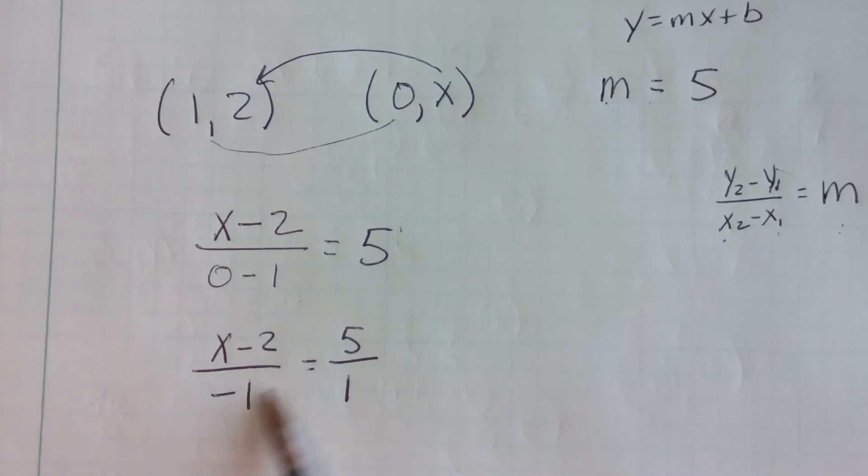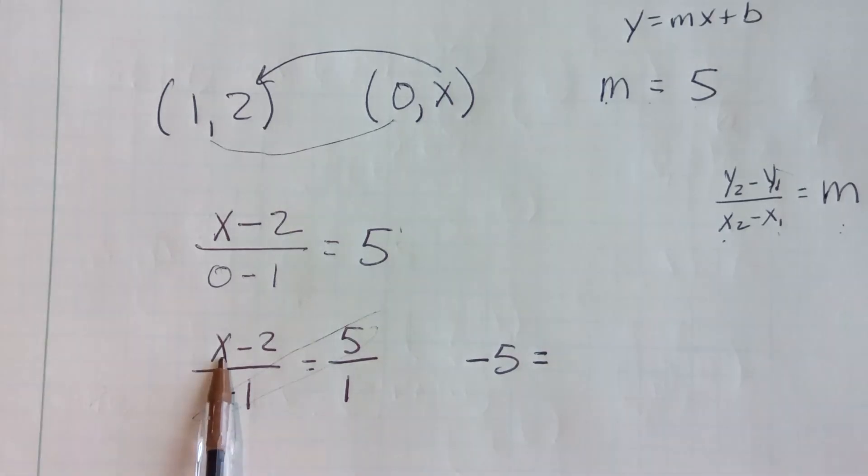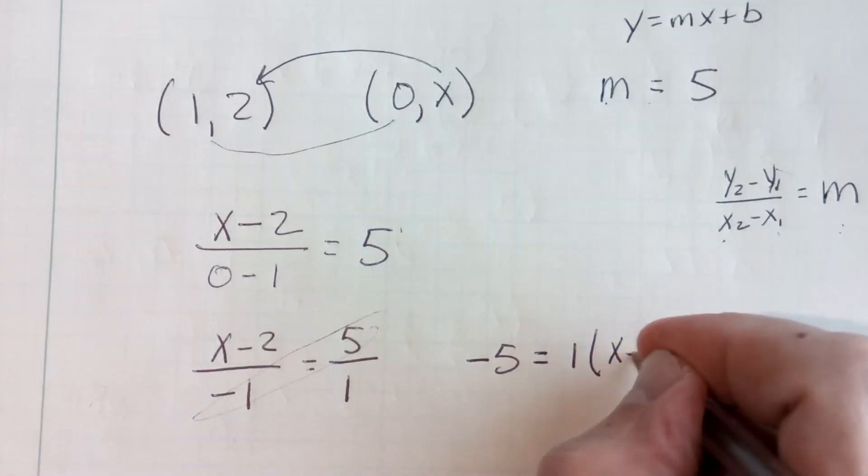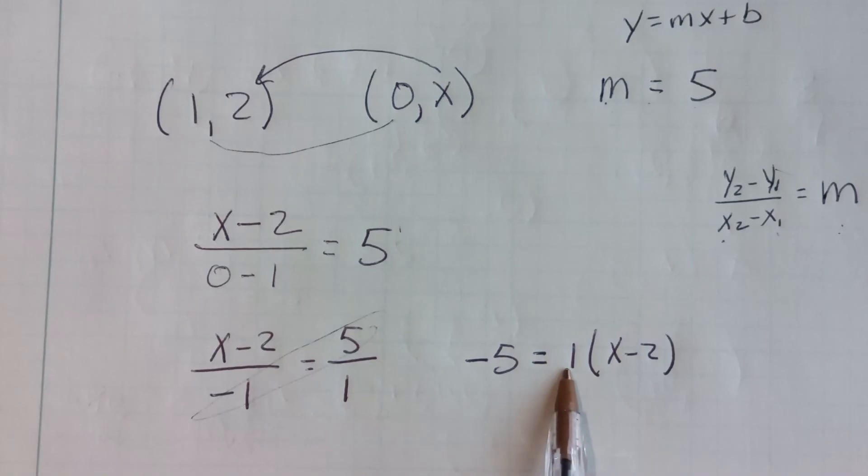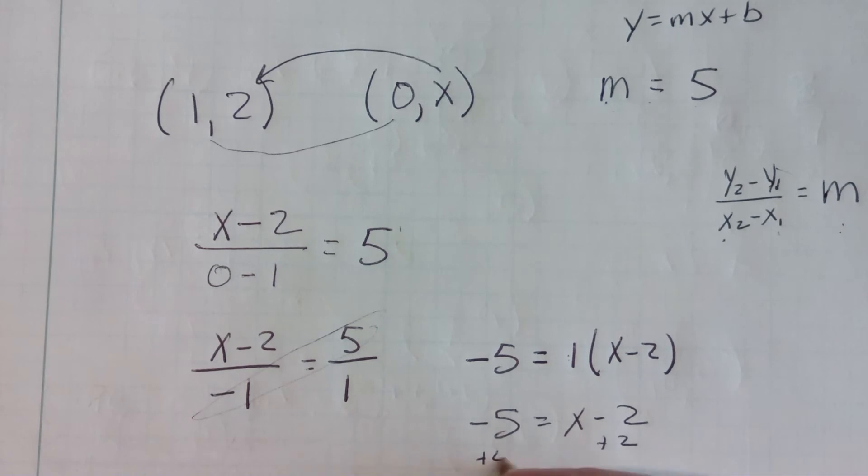But what now I'm going to do is I'm going to do that cross multiply. I'm going to do the negative 1 times the 5 and get a negative 5 equals, and then I'm going to multiply the x minus 2 times 1. So 1 times, in parentheses, x minus 2. And the only reason I did this is oftentimes this won't be a 1, and you'll have to distribute it in. But since it's a 1, it doesn't change. So I have negative 5 equals 1 times x is x. 1 times negative 2 is minus 2.